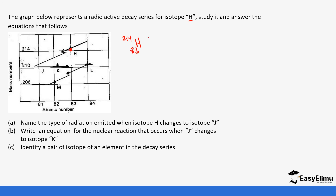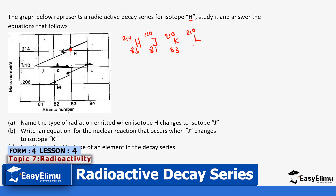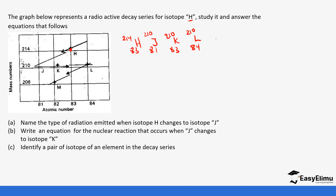From H, the decay forms J, which has mass number 210 and atomic number 81. Then K has mass number 210 and atomic number 83. Then L has mass number 210 and atomic number 84. Finally, M has mass number 206 and atomic number 82.